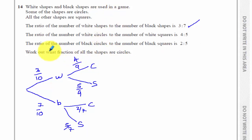So when it comes to working out what fraction of all the shapes are circles, there are two pathways to take. They are white circles and there are black circles. So two pathways along the tree diagram.